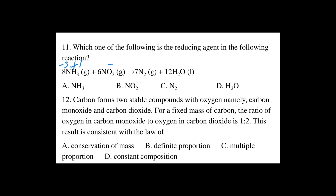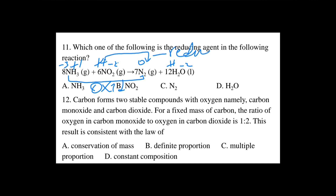Oxygen in nitrogen dioxide has a -2 oxidation number, and nitrogen in NO2 has a +4 oxidation number. For a nitrogen molecule, the oxidation number is zero. Nitrogen in NH3 has a -3 oxidation number. Going from -3 to 0, the oxidation number increases — NH3 is the oxidized substance, therefore NH3 is the reducing agent.